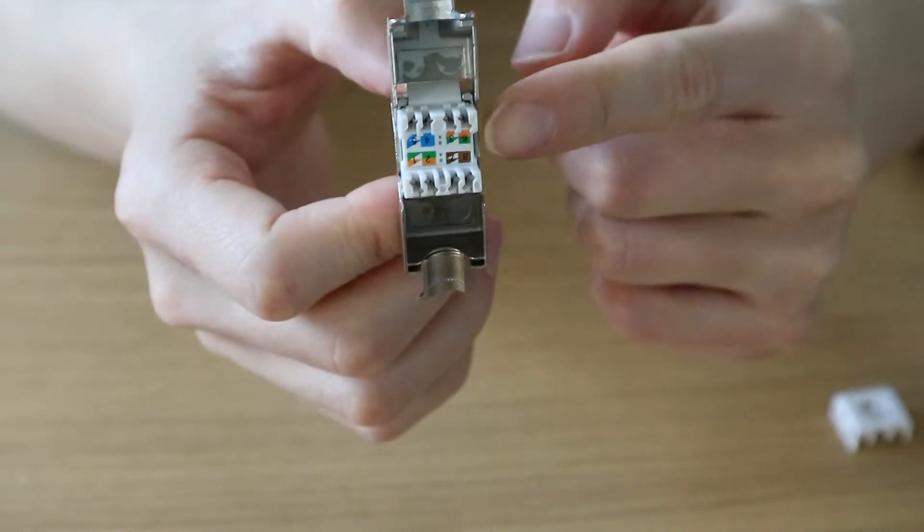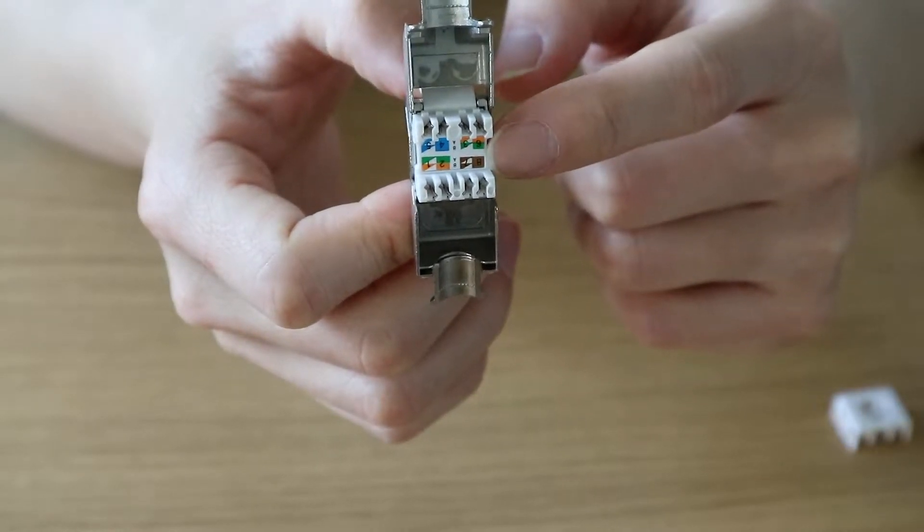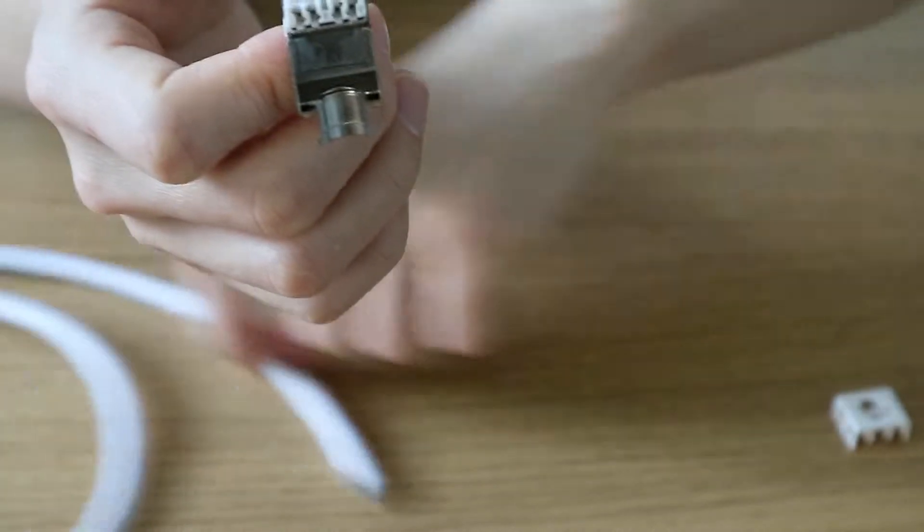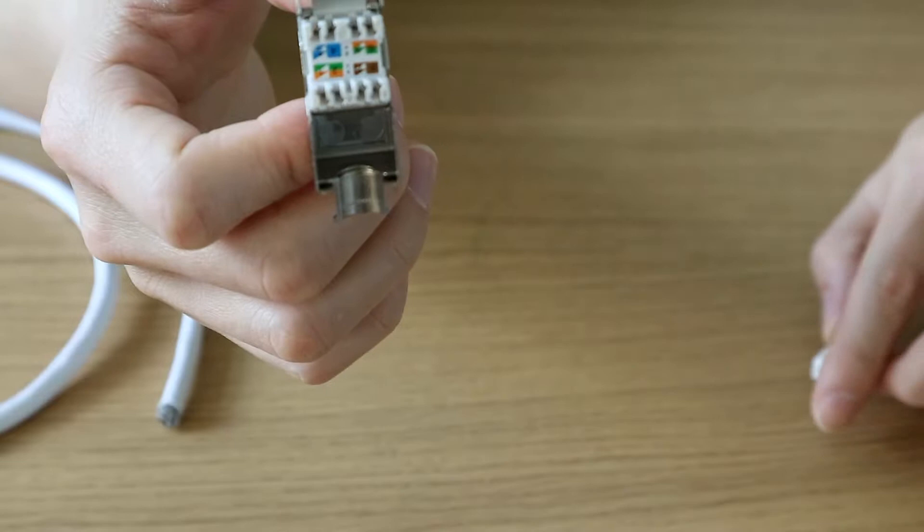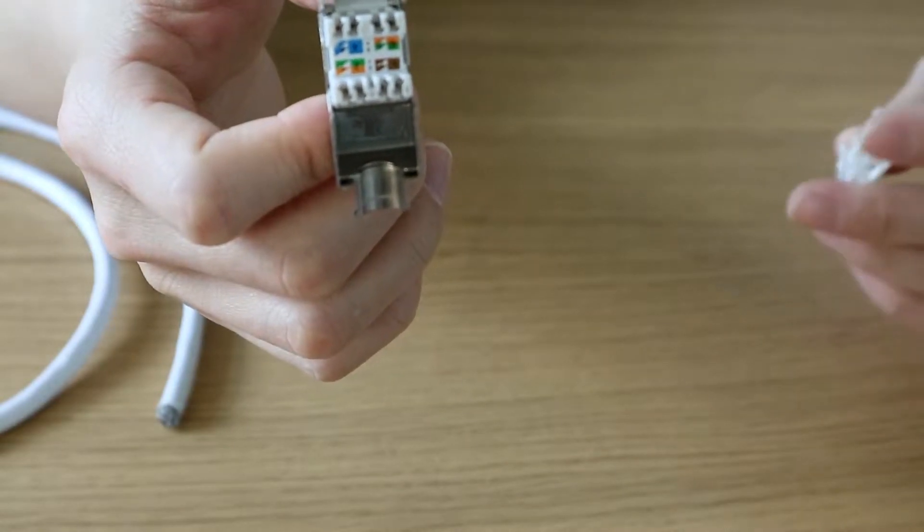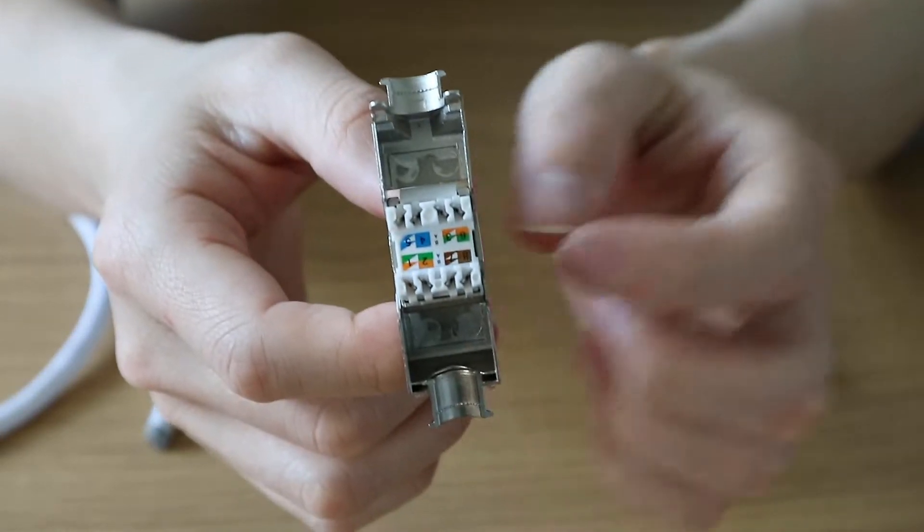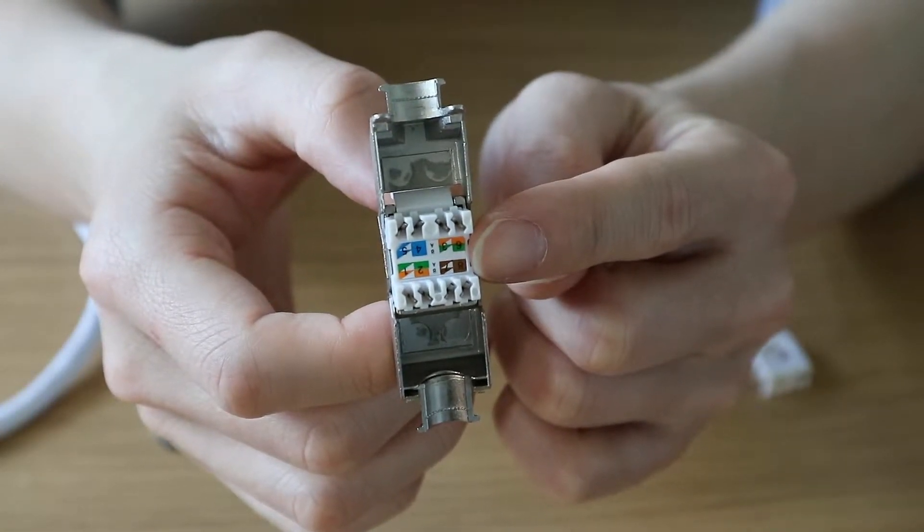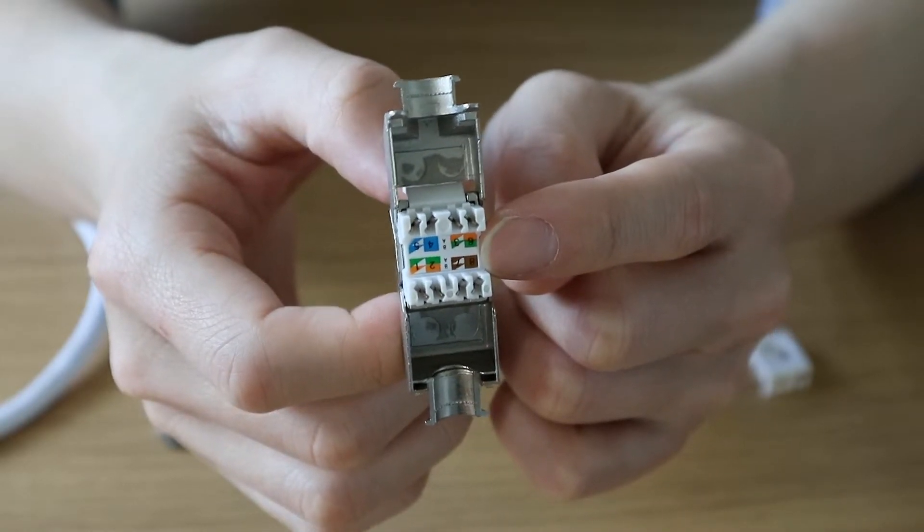Right, let's have a closer look at the modular keystone. It says 6A. Because this is modular, it's fairly straightforward to install. You can see there are different color coding which is in here.